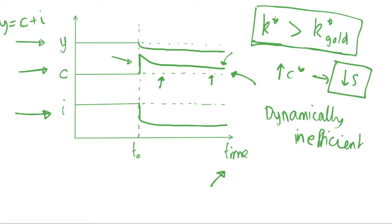It just makes sense for the policymaker to do this, because in the short term we have higher consumption and in the long term we also have higher consumption. So if we are above the golden rule steady state, we're dynamically inefficient — we shouldn't be there because it makes sense in every time period to decrease the savings rate and increase consumption. We can be better off at all points in time.